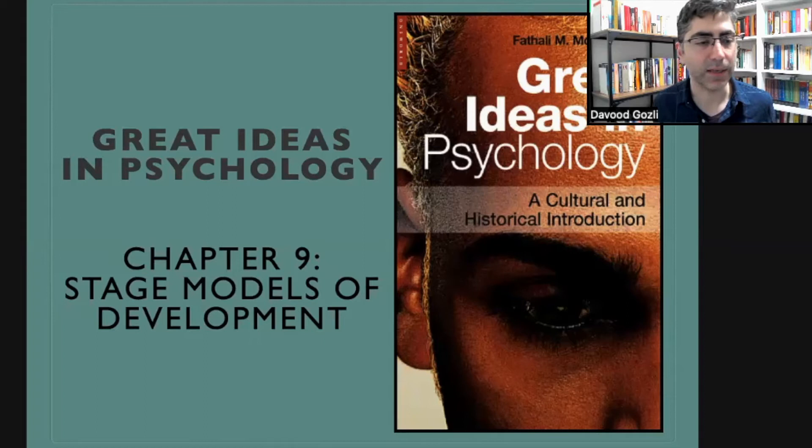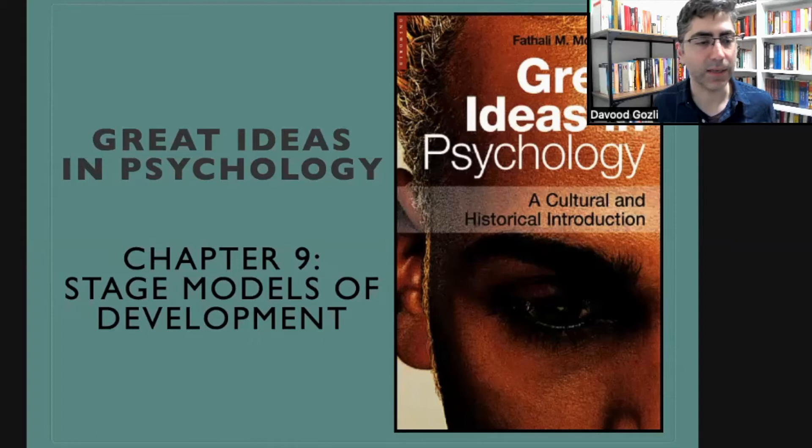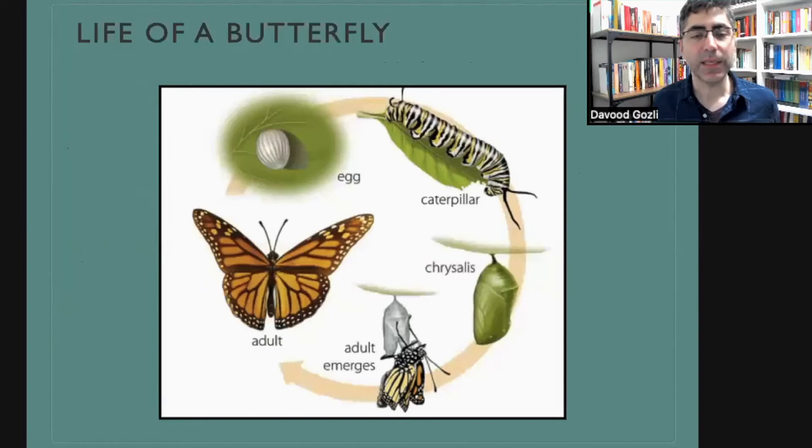Here we are — the book again: Great Ideas in Psychology by Fatali Muaddam, Chapter 9, Stage Models of Development. This is our place in the general map of the series. After this will come a response to parts of what you cover in this chapter by another thinker.